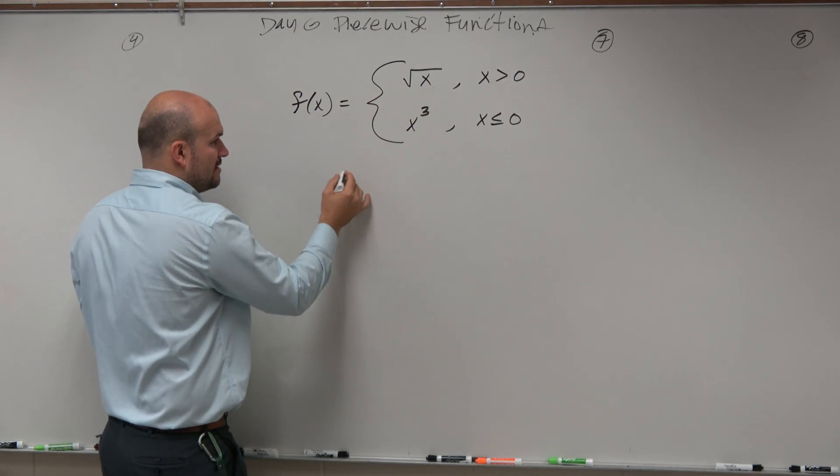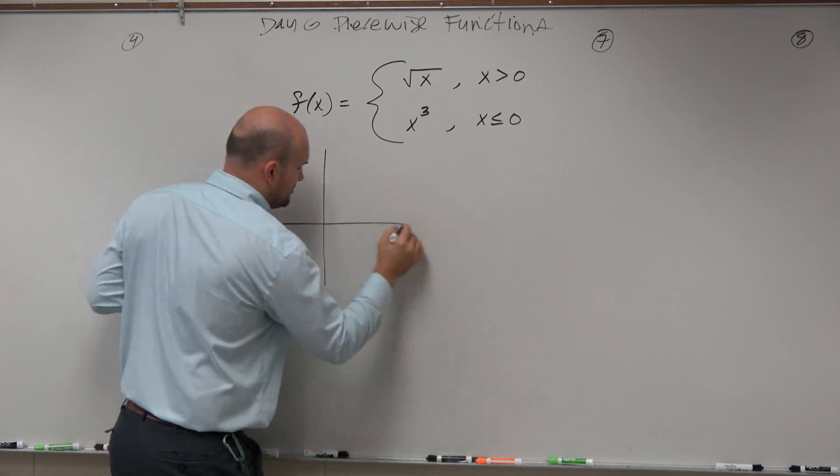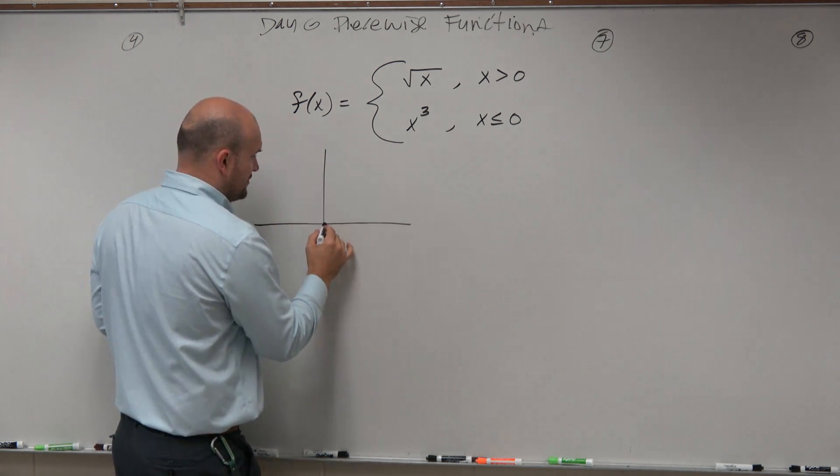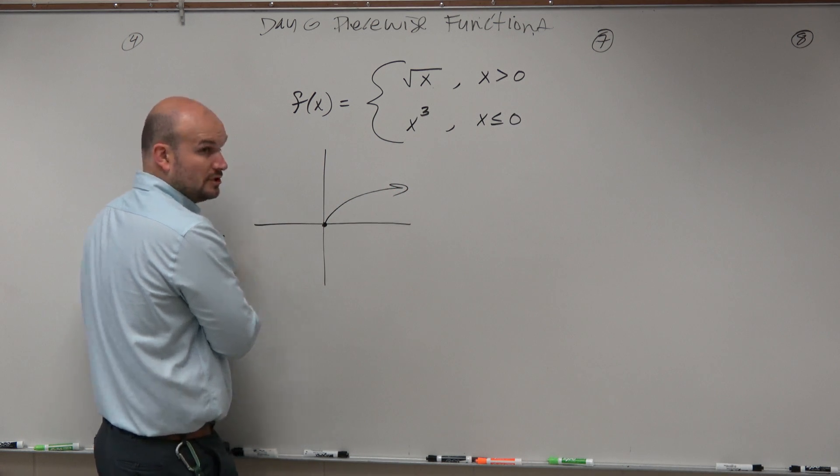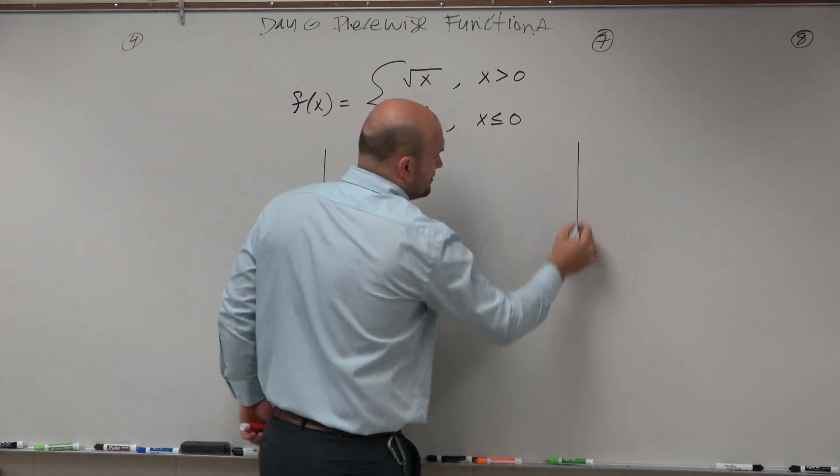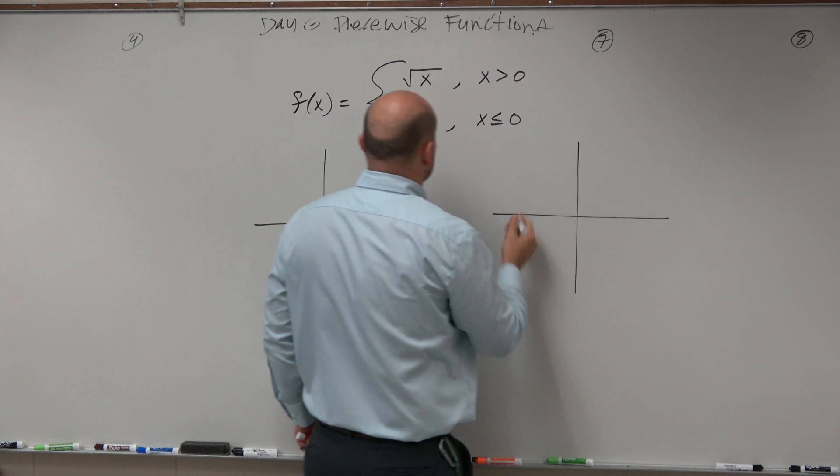So in the first one, we have the square root of x. Now, we just graphed the square root of x, so hopefully this shouldn't be anything major for you guys. We know the square root of x looks like this, correct? And then we have x cubed looks something like this.